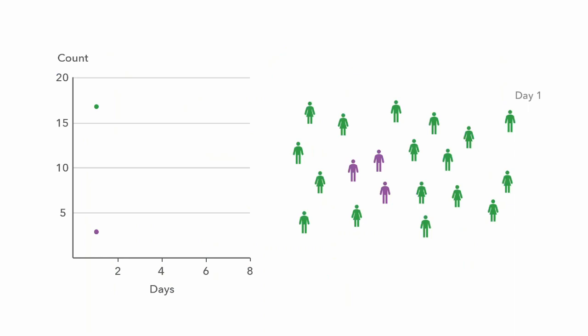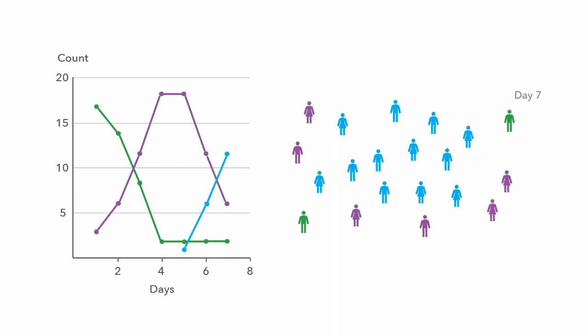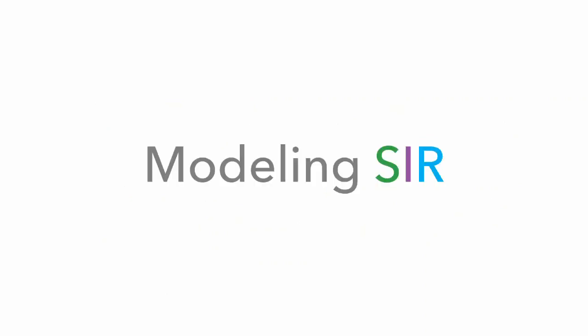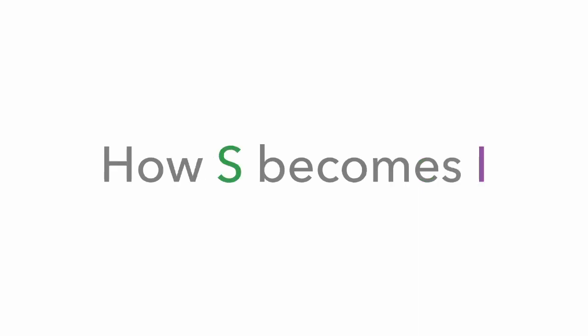Looking at that through a chart: day one, 17 susceptible and three infected. Day two, the disease starts to spread — six infected, 14 susceptible. We continue until we reach a peak of infections. Then suddenly we see this third new line of recovered individuals that starts to become the predominant category. That's the goal of this model: how do we determine these three lines? How do we model these three states that any individual can be in during this epidemic?